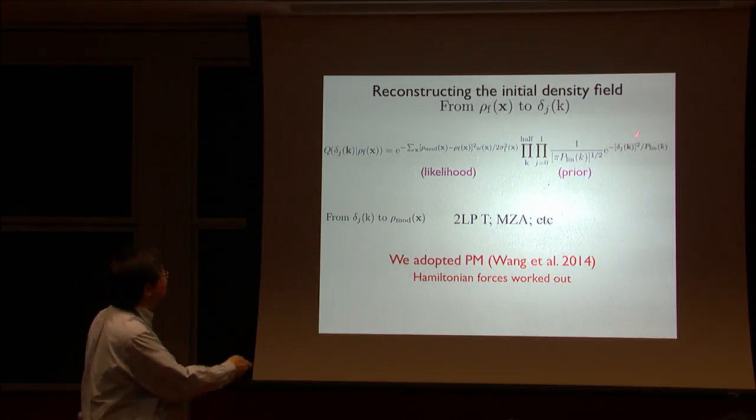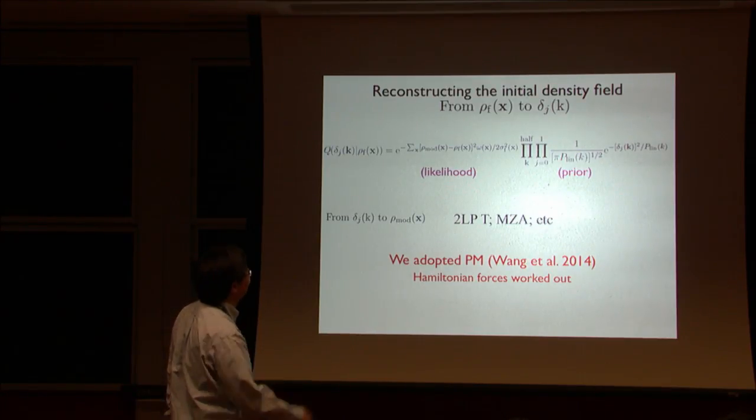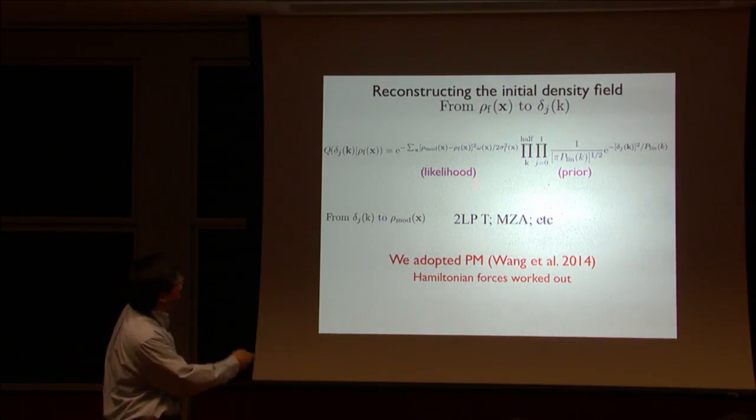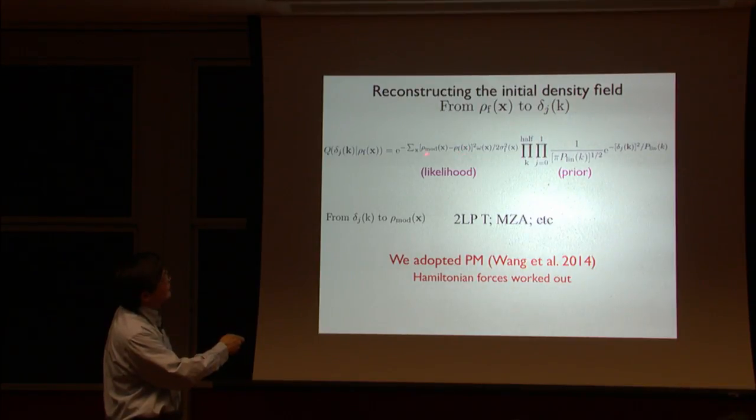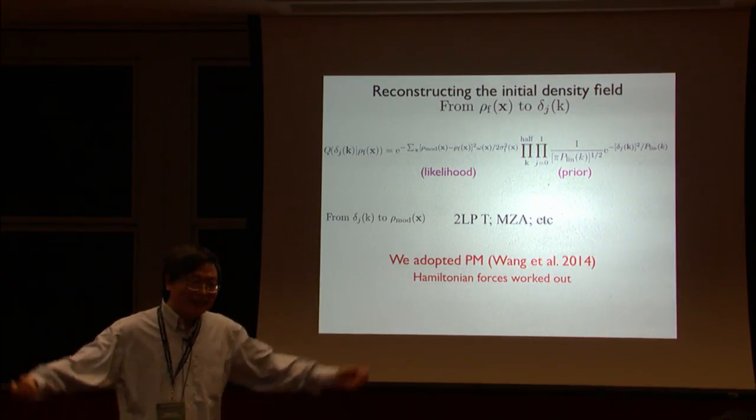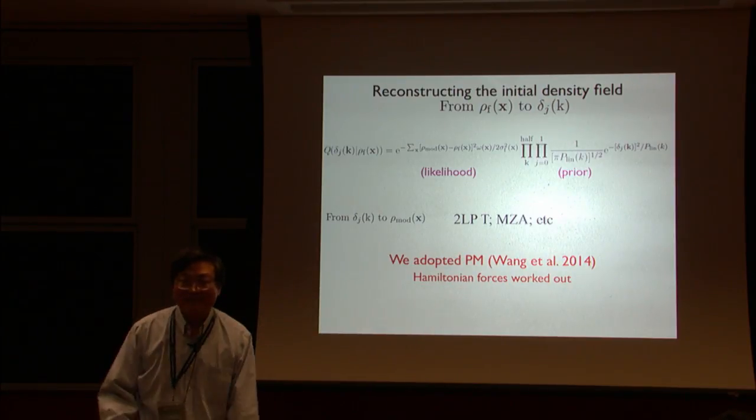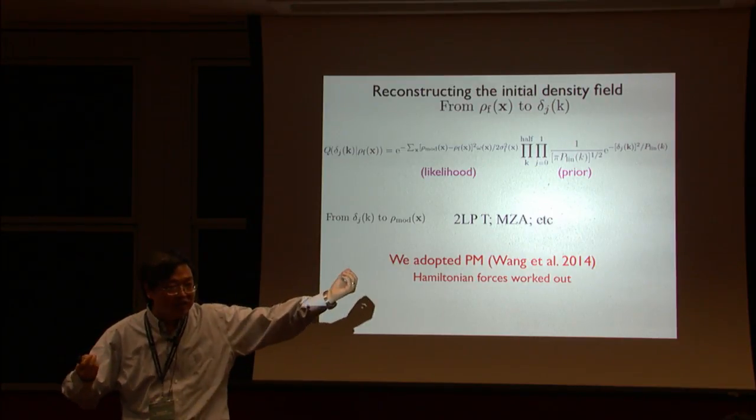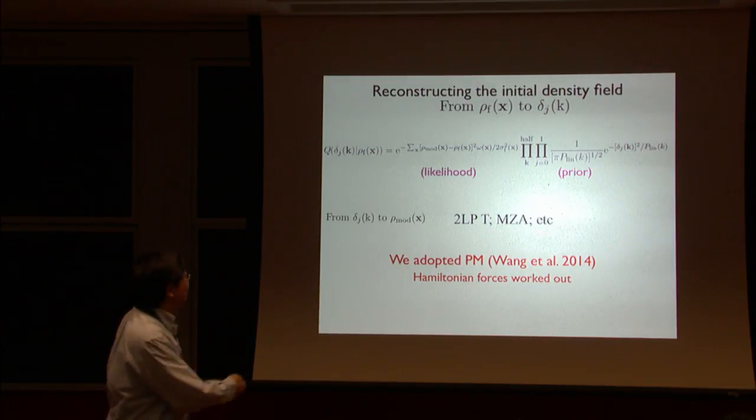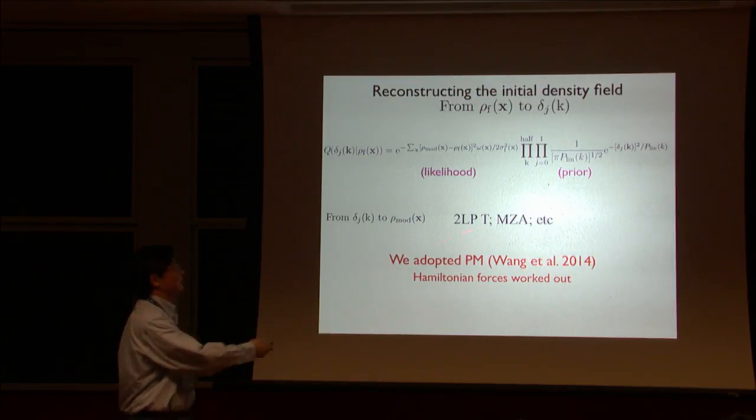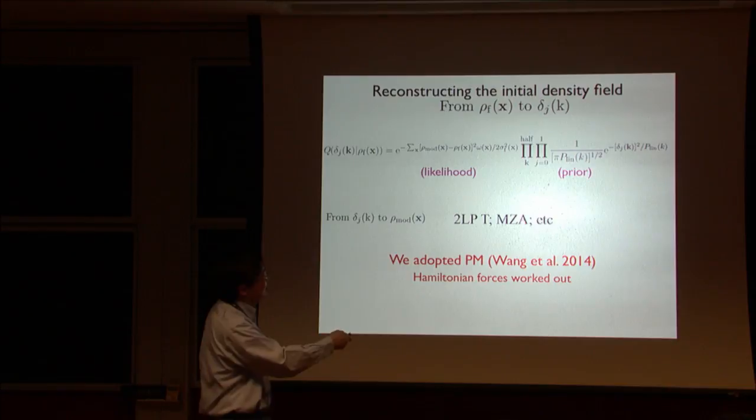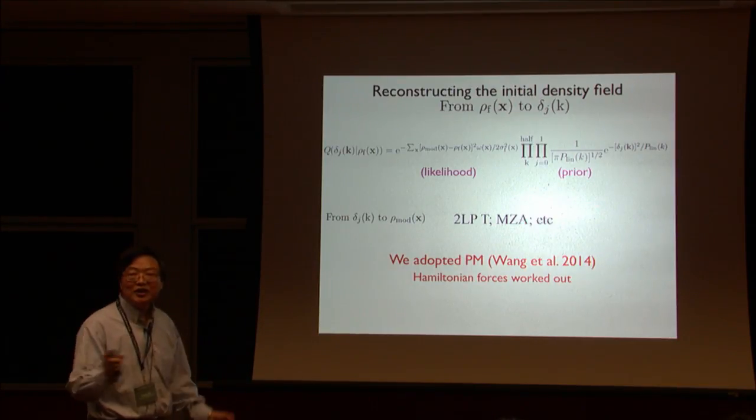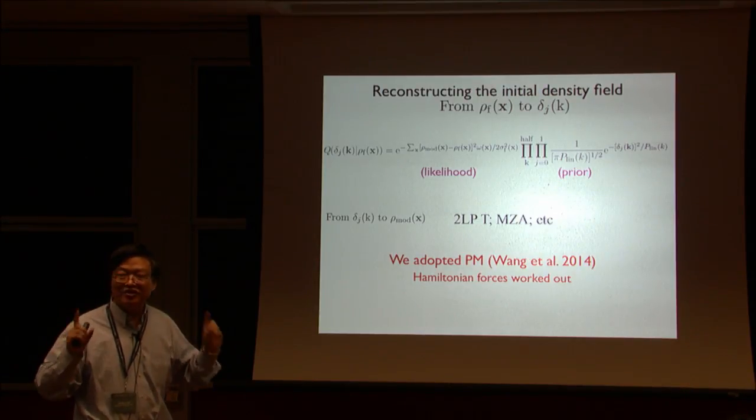You search many modes. Here, this likelihood, and here's the prior again. But in order to do that, you need one thing. This is your input field. This is the model field. How do you model that? I can use the P3M or whatever, but I cannot do that because that's too slow. I need to convert the initial conditions to the final one. You can use second-order perturbation theory or some modified ZA approximation. You need to get this very accurate.